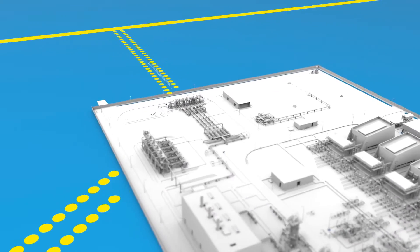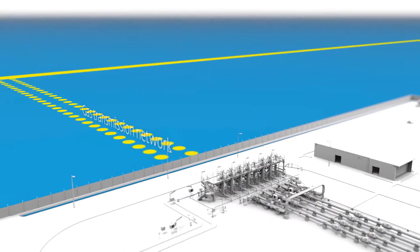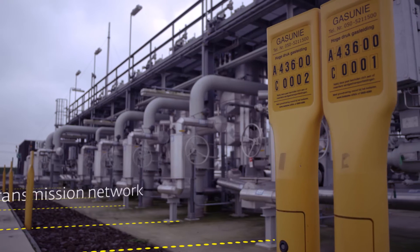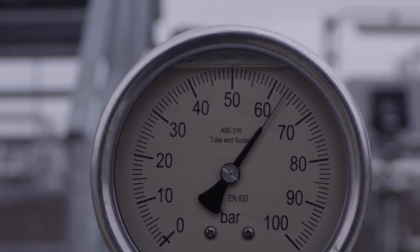The installation is in turn connected to the Dutch gas transmission network. Gas is pumped through this transmission network at a pressure of around 60 bar.